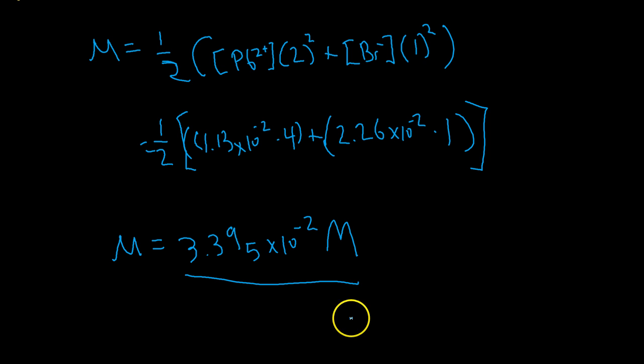So that shows you how to use what you understand about KSP to solve for the equilibrium concentrations of those ions. And you can plug those values into your equation for μ and then solve for your ionic strength. So in class on Wednesday, we're going to talk about how to use this ionic strength to determine the equilibrium concentrations of species when ionic strength is playing a role. And that has to do with activity coefficients. So we'll talk about that in class tomorrow.